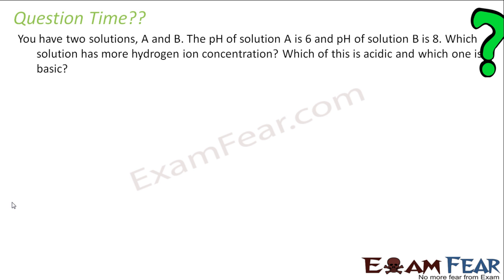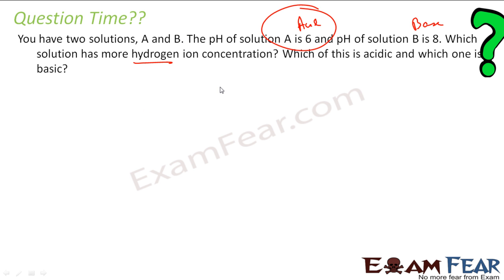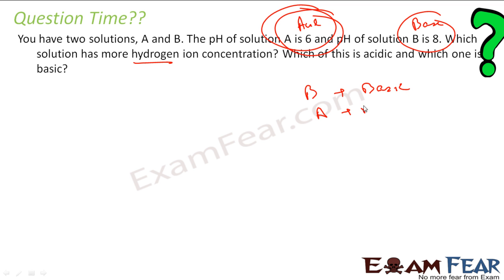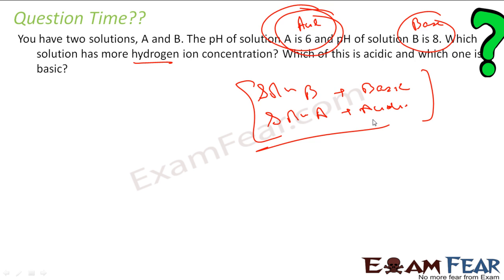Now it is question time. You have two solutions A and B. The pH of solution A is 6, which means it is acidic. The pH of solution B is 8, which is basic. Which solution has more hydrogen ion concentration? Obviously solution A has more hydrogen ion concentration — pH 6 is acidic so it has more H+ ions. Which one is acidic? Solution A is acidic. Which one is basic? Solution B is basic.